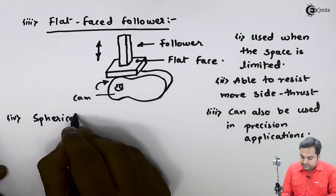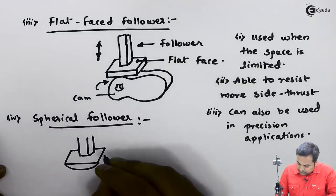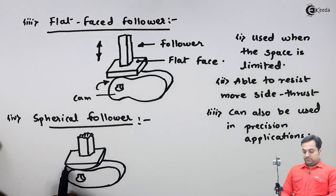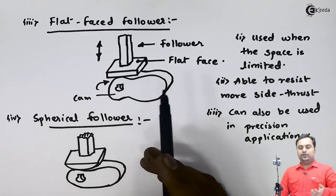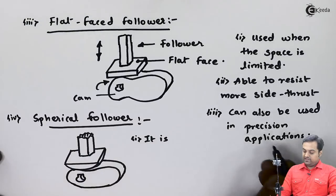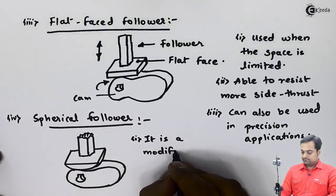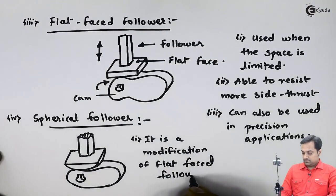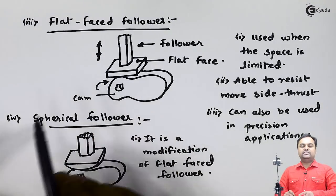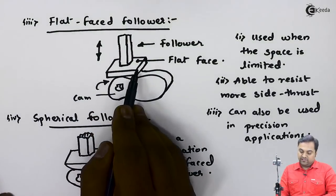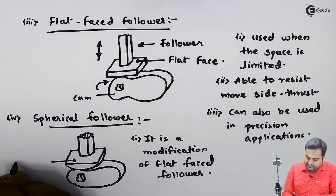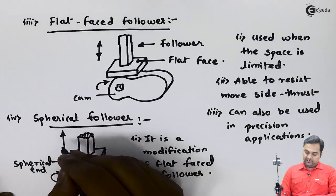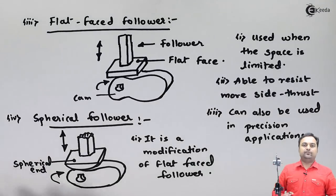The last kind of follower based on surface of contact is the spherical follower. In the spherical follower, the surface is curved. It is a modification of the flat face follower — if the flat face surface is ground smooth it becomes a spherical follower, giving it a spherical end. When rotation is given to the cam, the follower reciprocates.